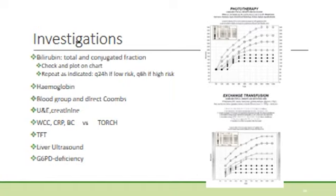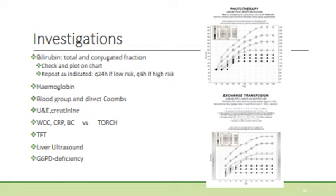The haemoglobin level should be taken to look for polycythaemia or signs of haemolysis with anaemia. Blood group and direct Coombs is indicated, especially if the baby presents with jaundice in the first day of life or if there are signs of haemolysis on the FBC. Jaundice can be worsened by dehydration, so in 3- to 4-day-old babies with breastfeeding-associated jaundice, the urea and creatinine should be checked to exclude severe dehydration. If the baby has signs of sepsis, white cell count and CRP can be done with blood culture. In conjugated jaundice, the TORCH infection group should be excluded. In prolonged jaundice, thyroid functions and further investigations such as liver ultrasound or G6PD deficiency screen may be indicated.